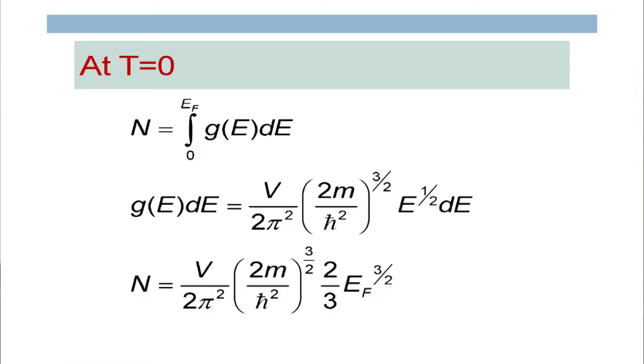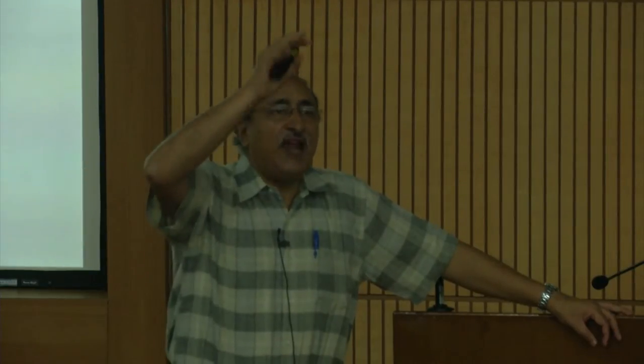Fermi energy also shows a small temperature dependence: E_F(T) ≈ E_F0 × [1 − (π²/12)(kT/E_F0)²]. At room temperature, kT ≈ 1/40 eV while E_F0 is typically 3–4 eV, so this correction term is of order 10⁻⁴. To a good approximation, we can assume that for metals the Fermi energy is temperature-independent.